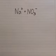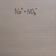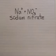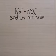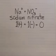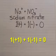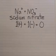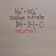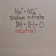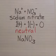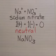Let's look at how we would name and write a formula for the sodium ion combined with the nitrate ion. So it's sodium nitrate, simple enough. Let's look at the charges: one positive one charge, one negative one charge. Those cancel out, so they are neutral, and the formula is simply NaNO3 — sodium nitrate.